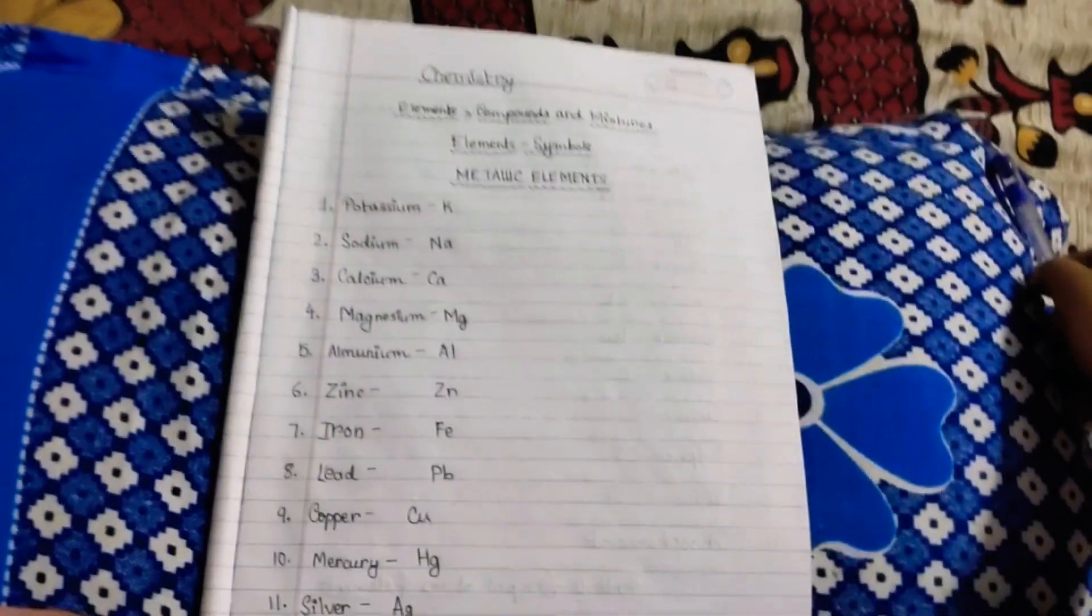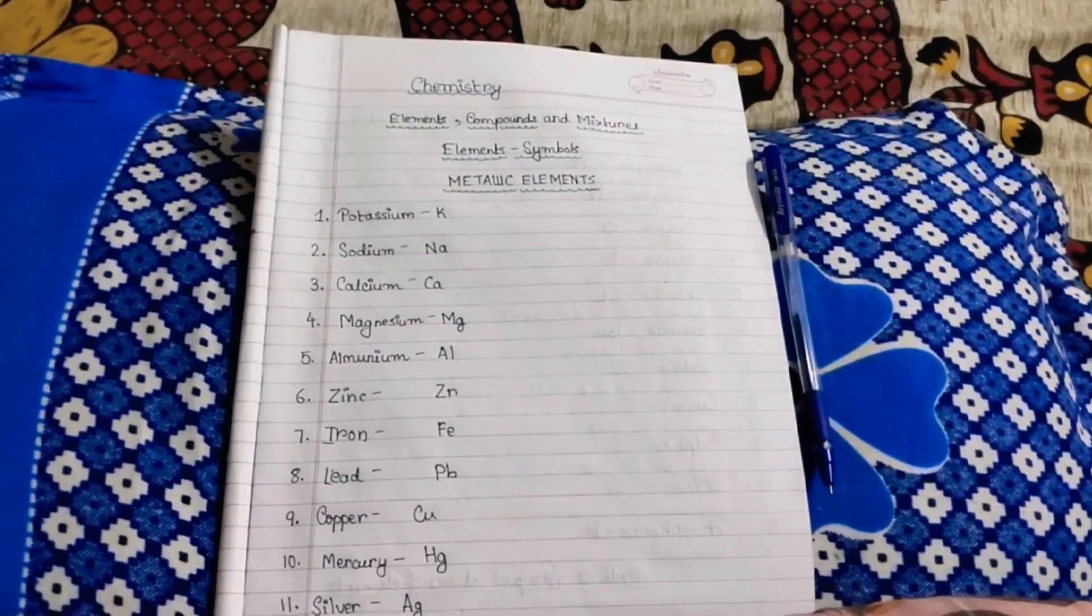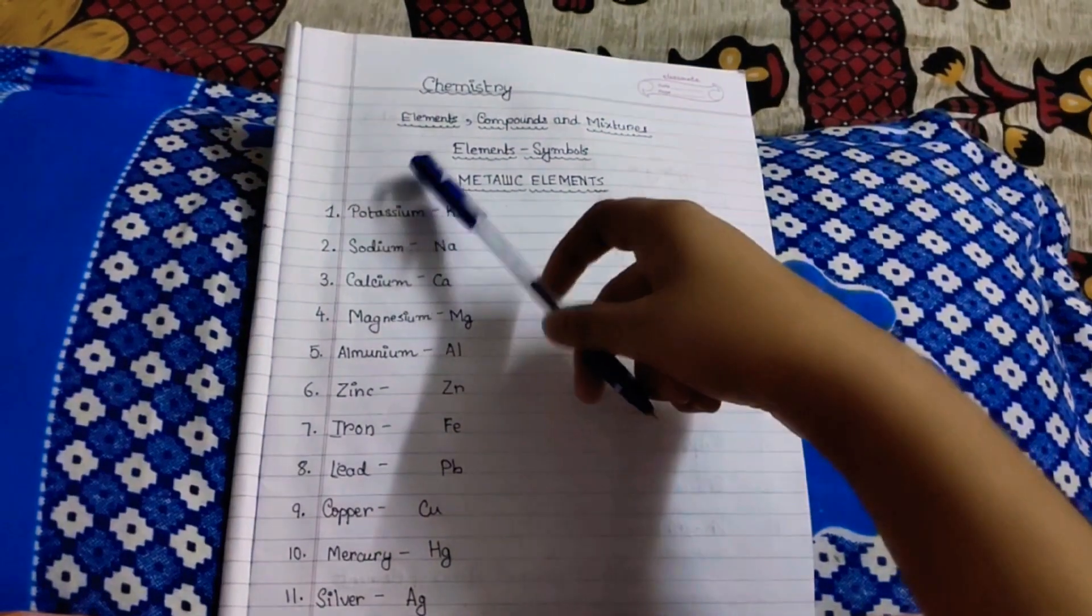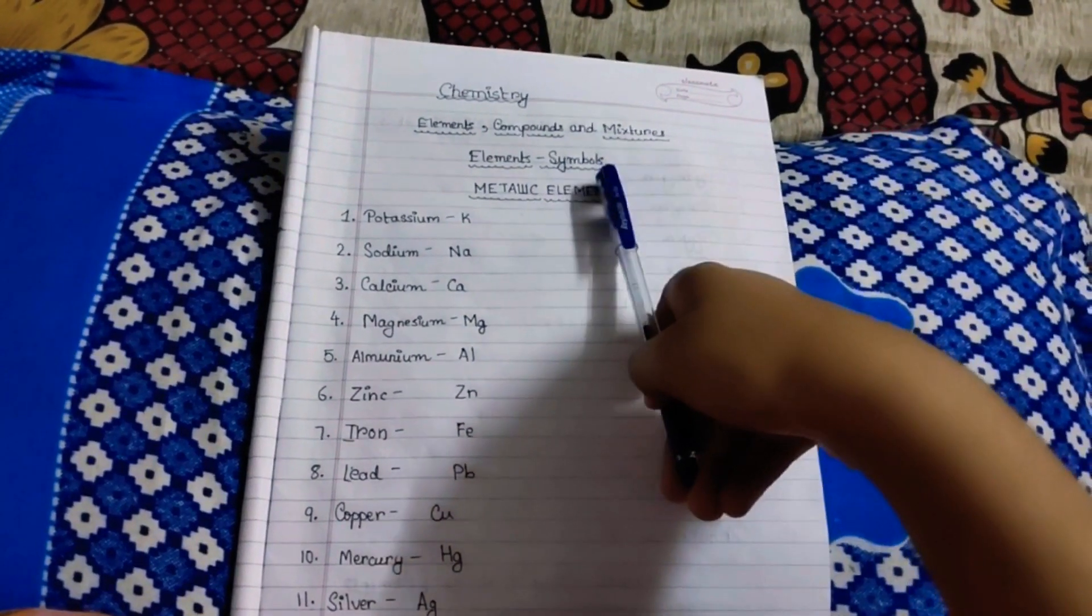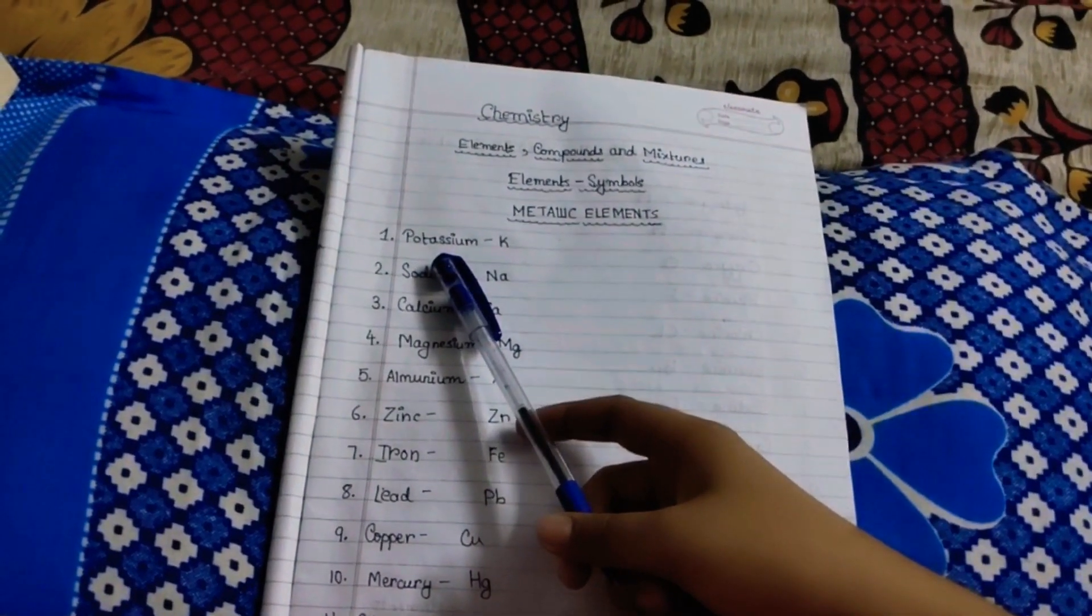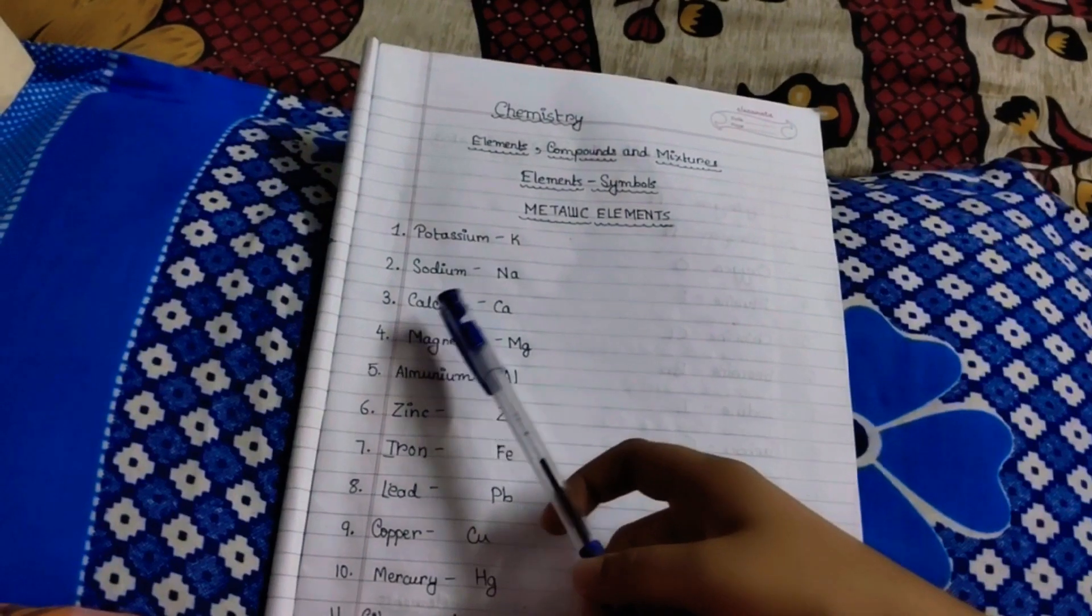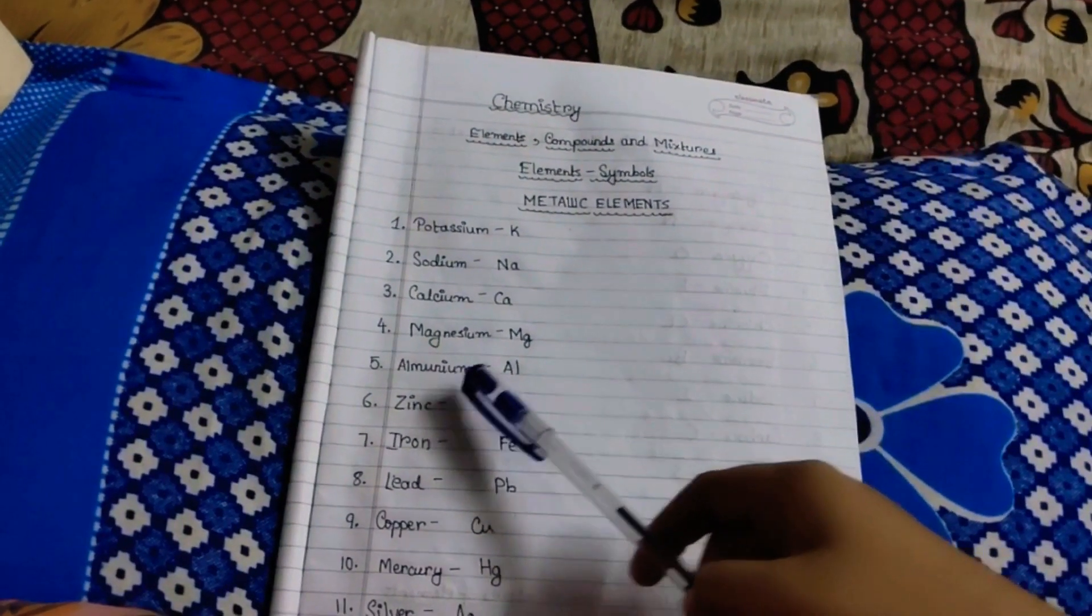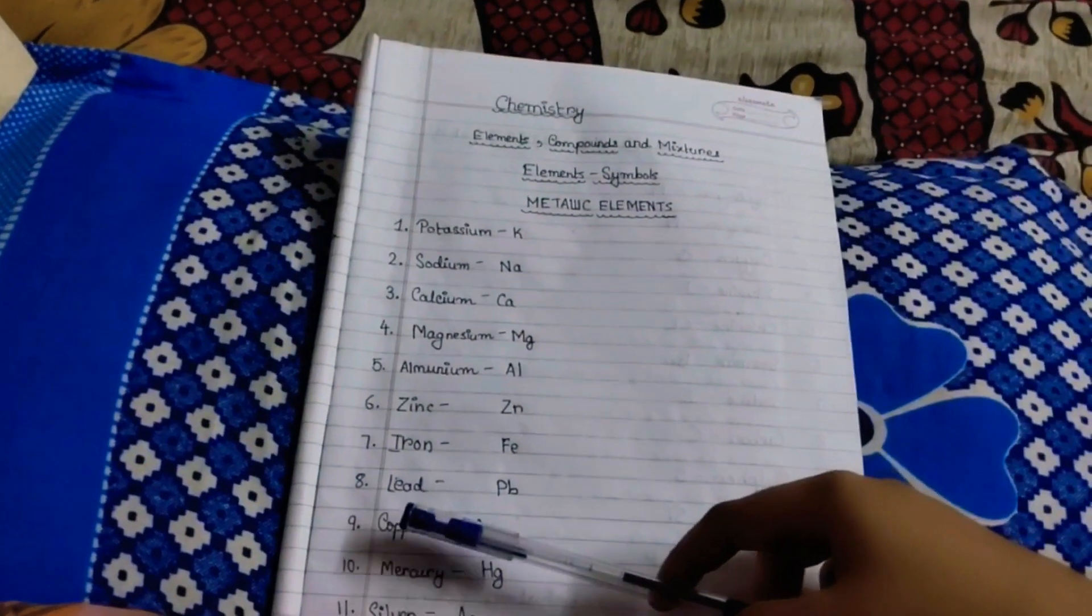First we will learn about the metallic elements, their symbols, then the noble gases, non-metallic elements, metallic elements and molecules. The chapter name is Elements, Compounds and Mixtures. First we will know about the elements and their symbols. The first category is metallic elements. Number one is Potassium, which stands for K. Second, Sodium equals Na. Three, Calcium equals Ca. Magnesium Mg, Aluminum Al, Zinc Zn, Iron Fe, Lead Pb.